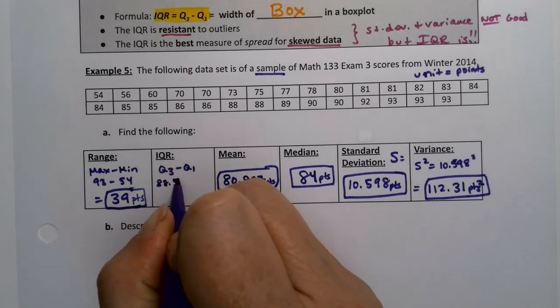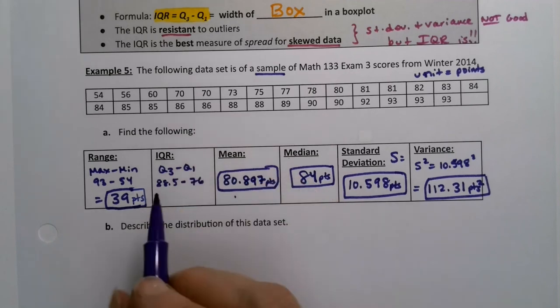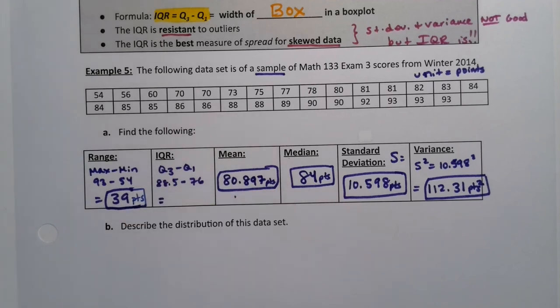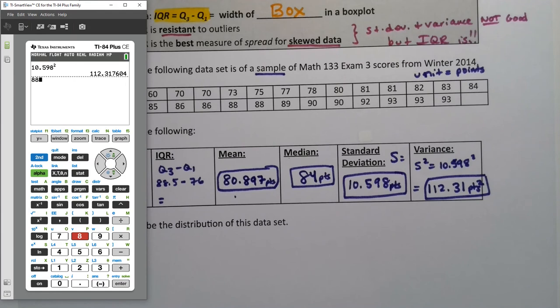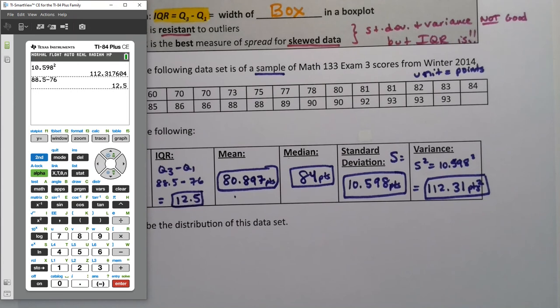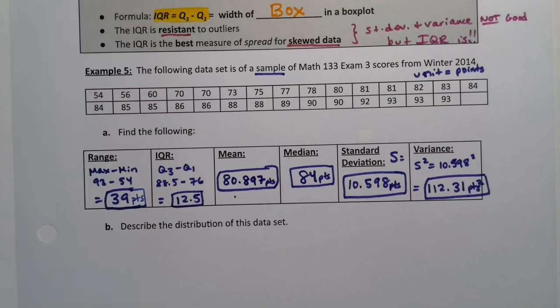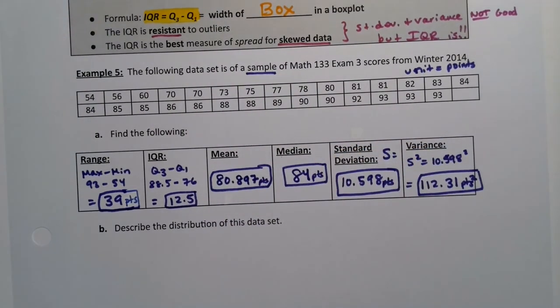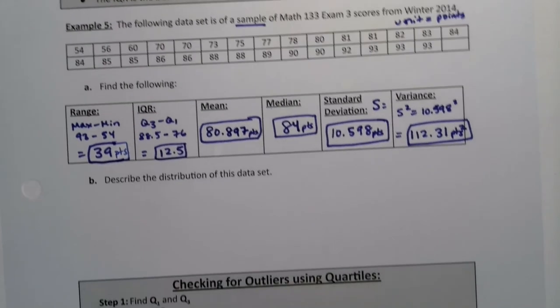That'd be 88.5 take away 76. If we use the calculator values, 88.5 minus 76, so 12.5. Now, if you use the StatCrunch values, you would get 12 because it would be 88 minus 76. So you're going to have to allow for the fact that it might be slightly different, depending on which way you're going.